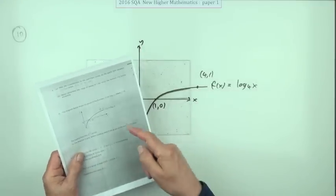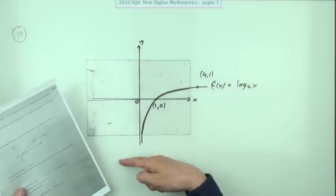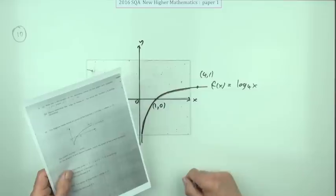Number 10: Just a quick sketch of a graph. You're given the graph of y equals log base 4 of x, calling it f(x) for the name of the function.